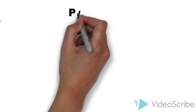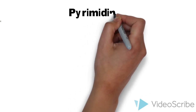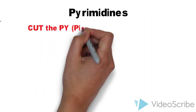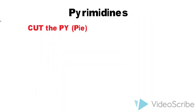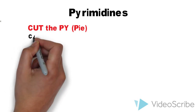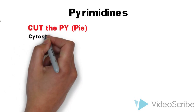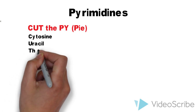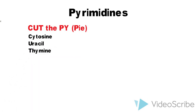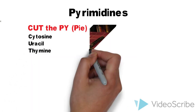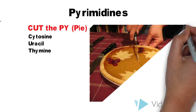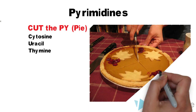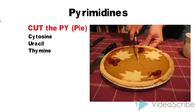Moving on to pyrimidines, the mnemonic is 'cut the pie,' where C is for cytosine, U for uracil, and T for thymine. The 'py' in the mnemonic will help you remember that these are pyrimidines.